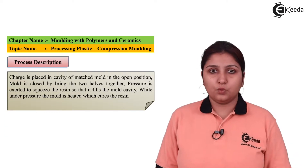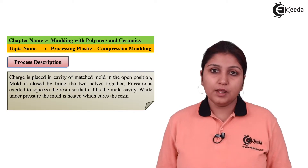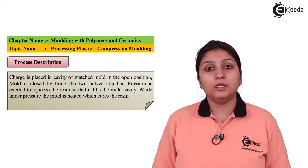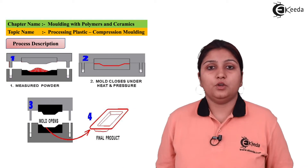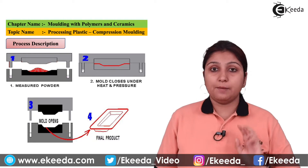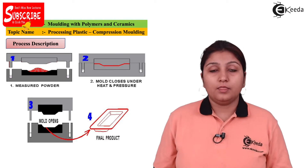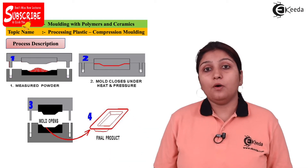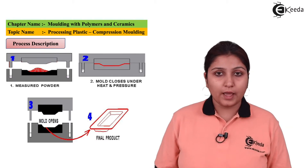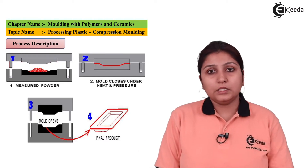The mold is kept between the two dies and it gets compressed. The process involves both compression and heating — the mold which is kept is a heated product so that the compression process is easy. In this picture you can see a powdered mold kept between the two dies; in the second stage, actual compression of the powder takes place; in the third stage, the compressed mold is removed by moving the upper die; and in the fourth stage, the final product in the form of a plate is formed.